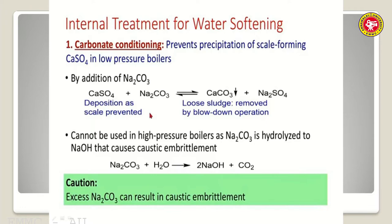Carbonate conditioning is simple: calcium sulphate is present in hard water and will form scales. So you add a calculated quantity of sodium carbonate. The calcium sulphate, which would form a hard-to-remove scale, is converted into calcium carbonate, which is a loose sludge that can be removed by blow-down operation.